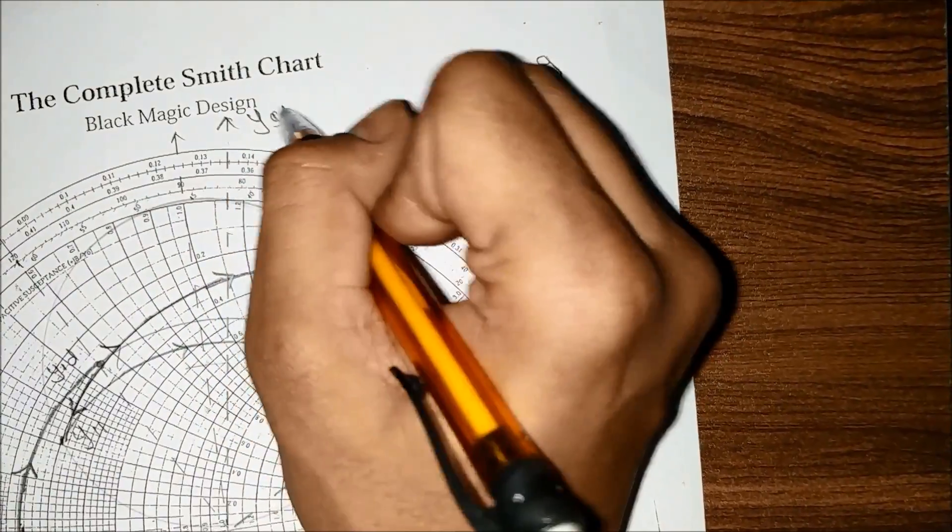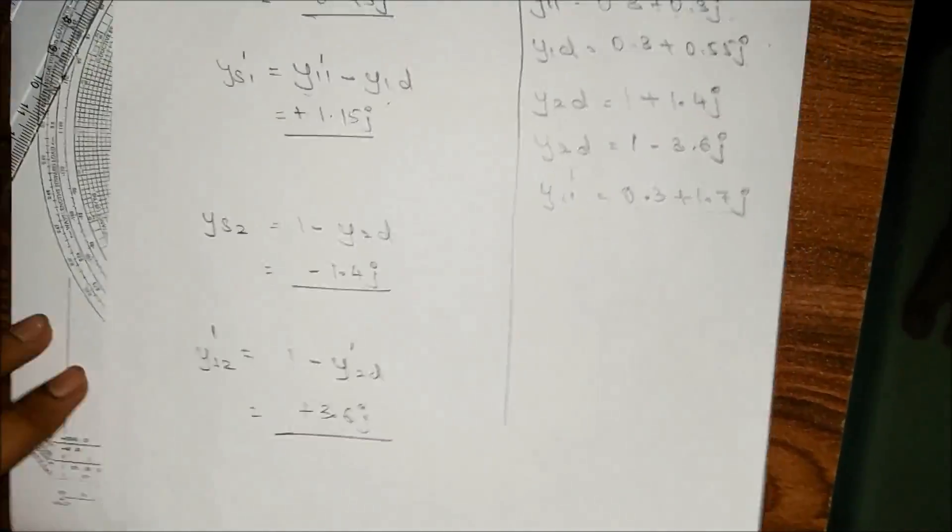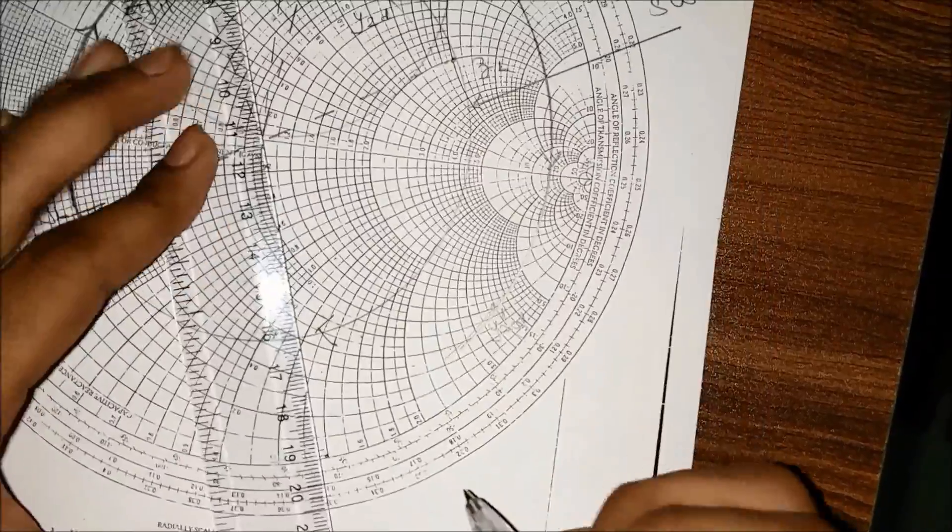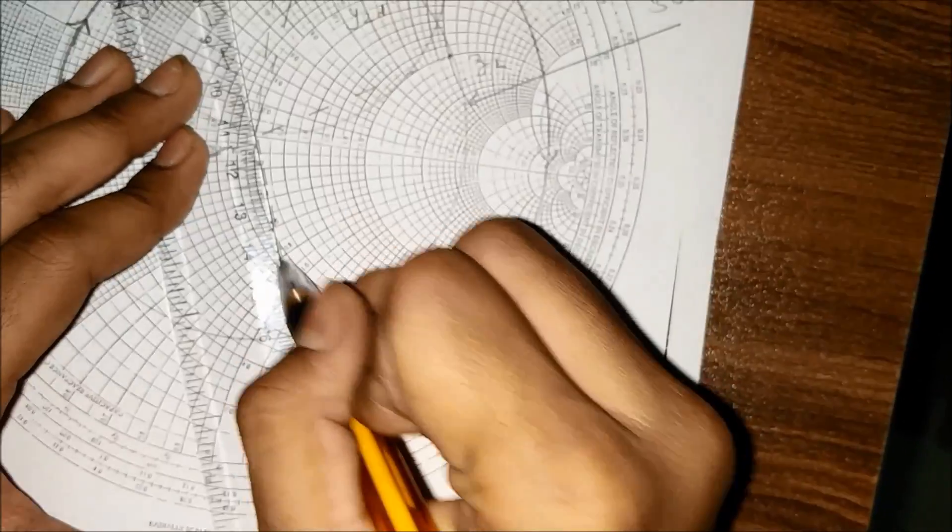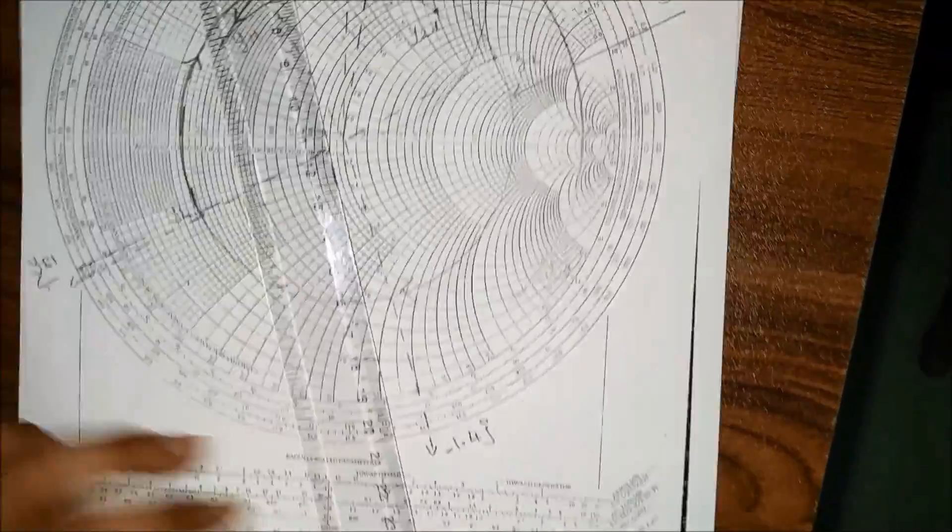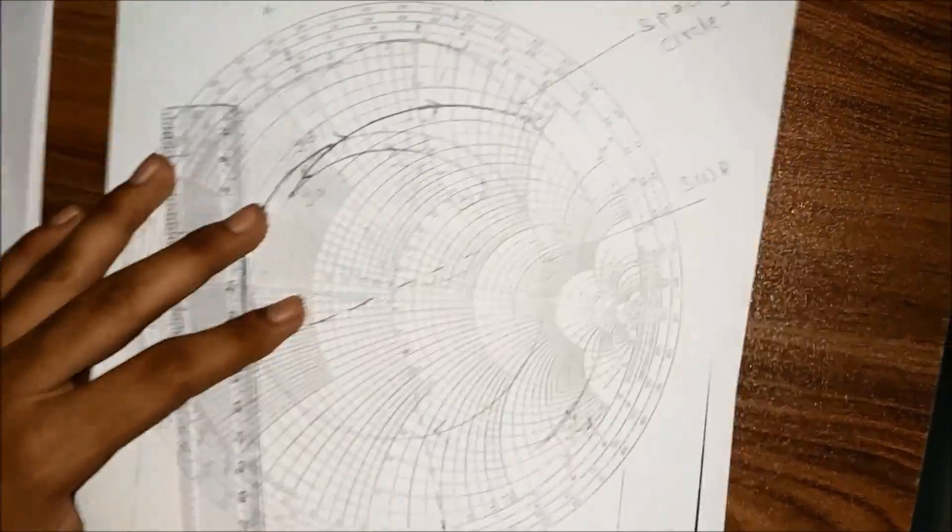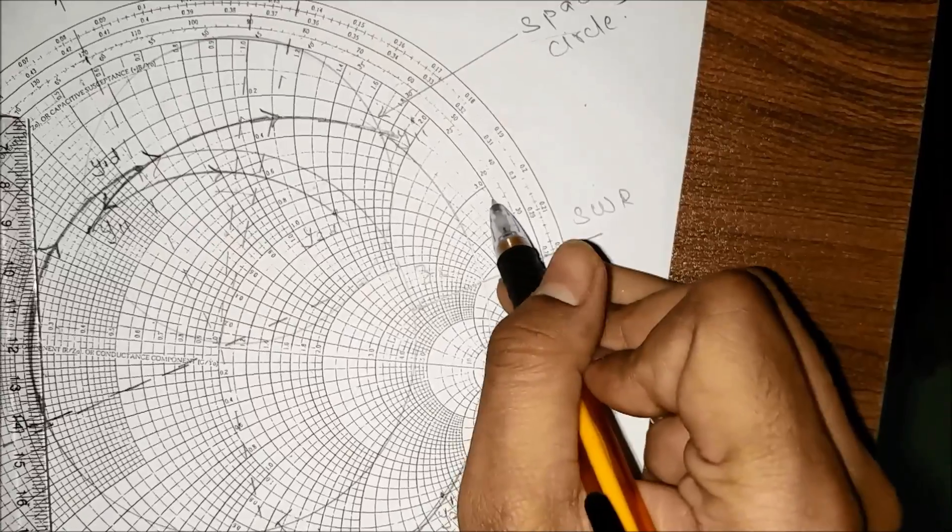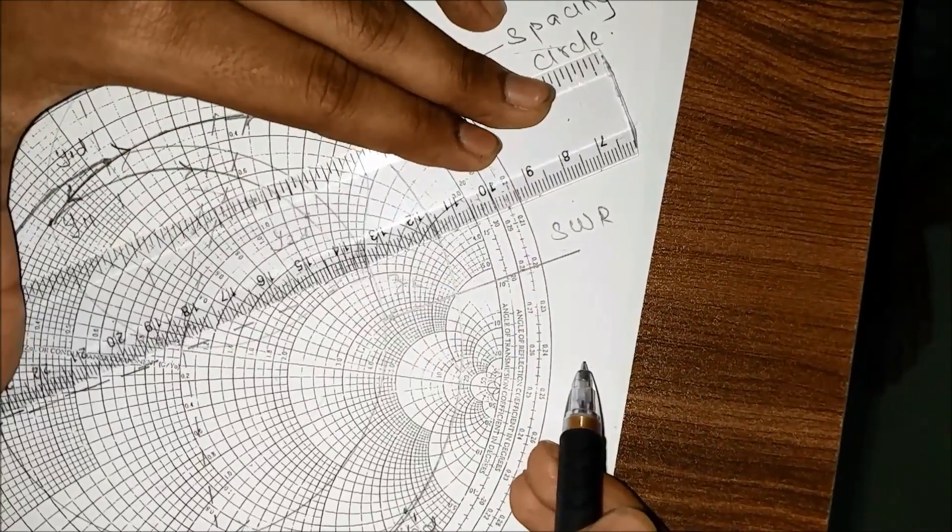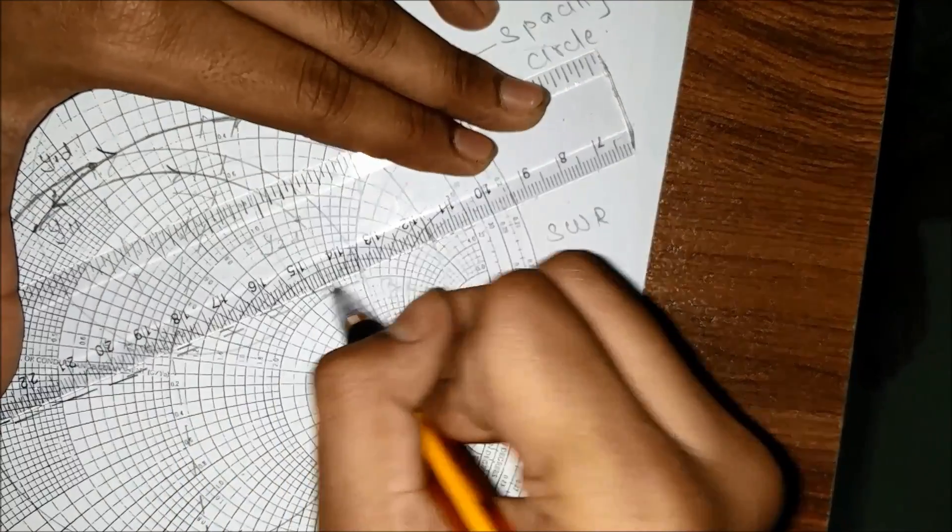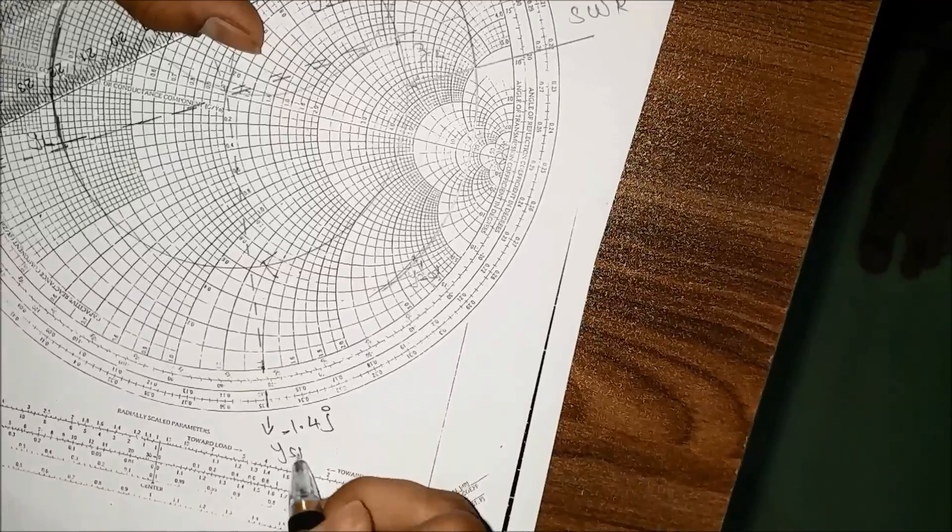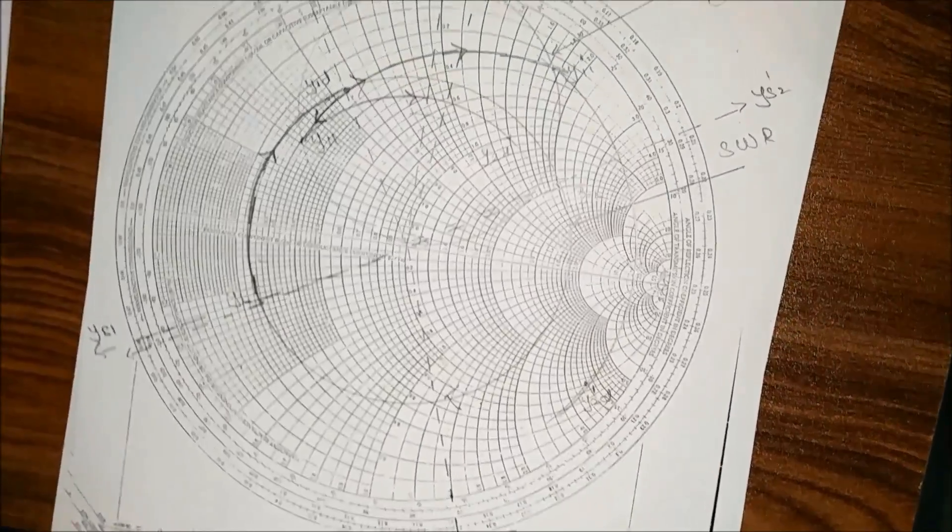ys2 is minus 1.4j, so this is 1 and 1.4. We extend that as ys2. The last one is ys2 dash at 3.6j positive - 3 is here, 3.2, 3.4, 3.6. This is ys2 dash.